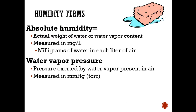Now for humidity terms: absolute humidity. This is a good time to pause and open your Egan book to page 111, figure 6-3 — it will be very helpful for the next couple of slides. Absolute humidity is the actual weight of water, also called water vapor content, in a liter of air. It's measured as milligrams per liter — milligrams of water in each liter of air.